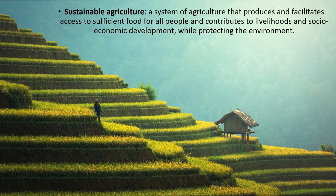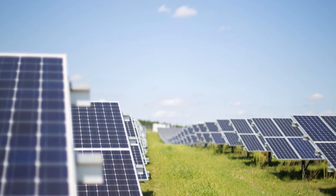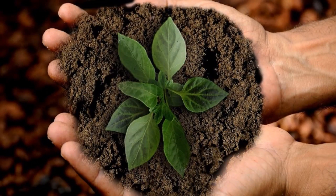Sustainable use of genetic resources can be broadly defined as the use of genetic resources in support of sustainable agriculture. Sustainable agriculture requires a system that produces and facilitates access to sufficient food for all people, contributes to livelihood and socioeconomic development, while protecting the environment. Sustainable agriculture must be productive — in many cases more productive than currently — to deliver the food, feed, and fiber required and generate the economic surplus needed to support livelihoods, create employment, and promote economic development. It must also be resilient.